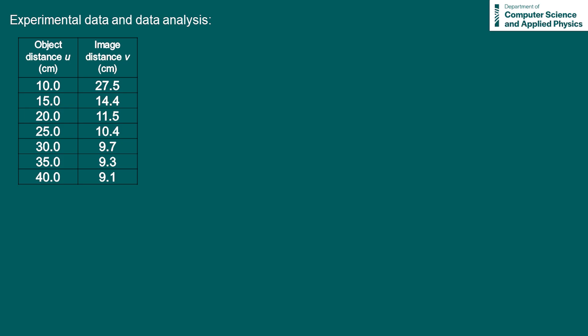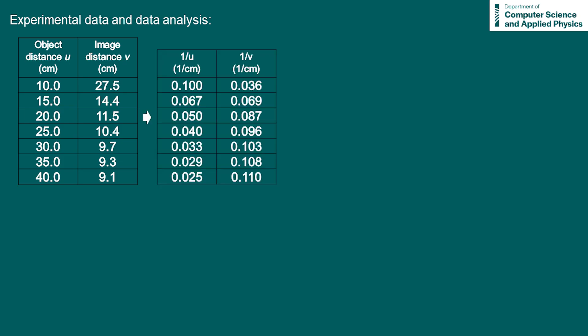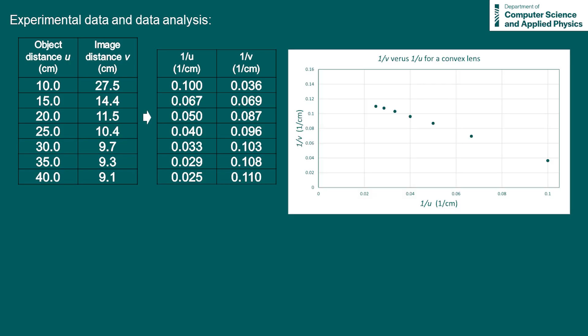Firstly, we'd need to convert all our object and image distances into 1 over U and 1 over V values. We can then plot our data. After this, we can apply a line of best fit.